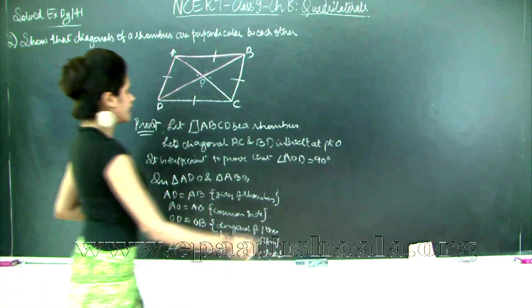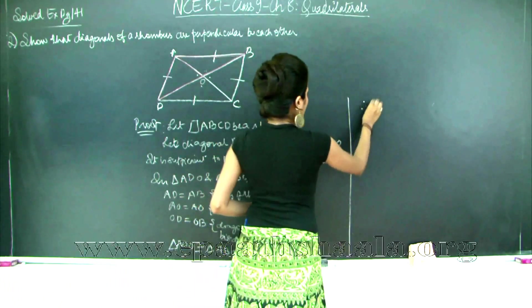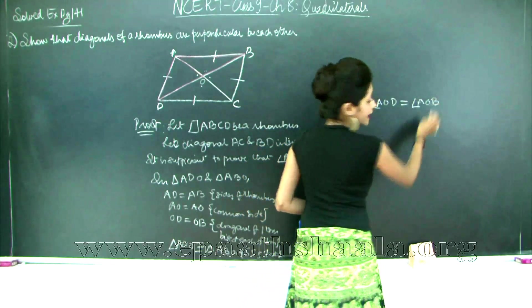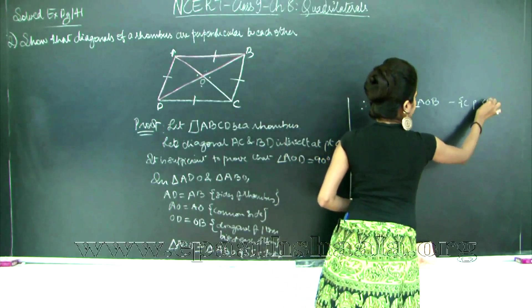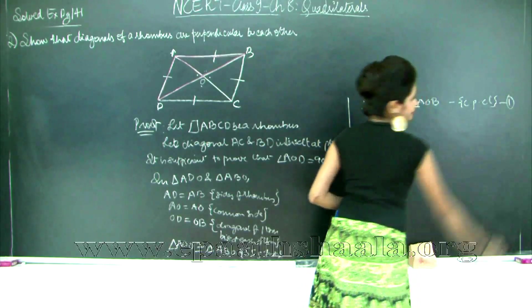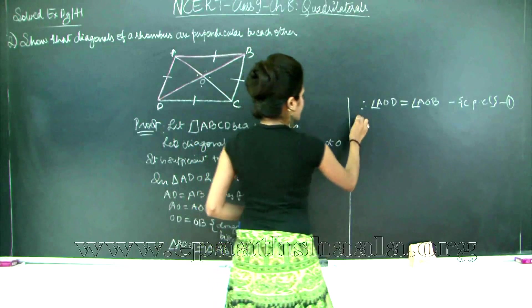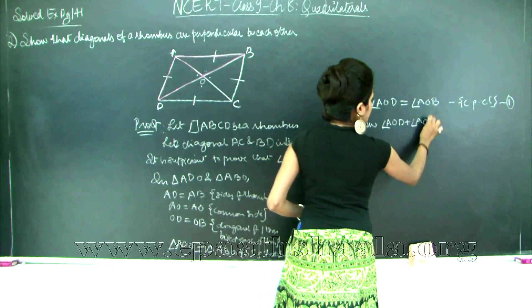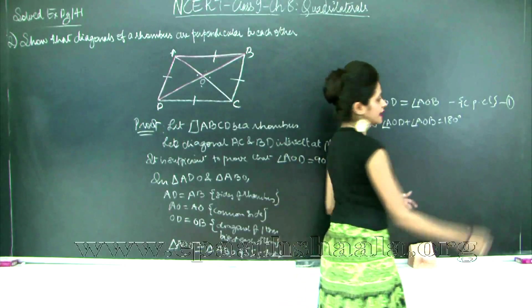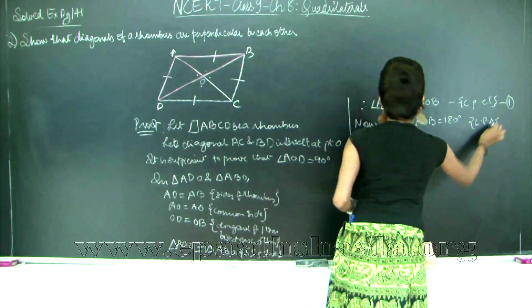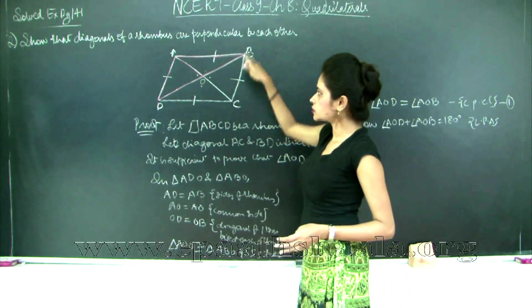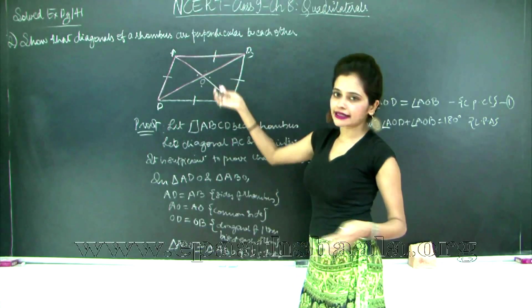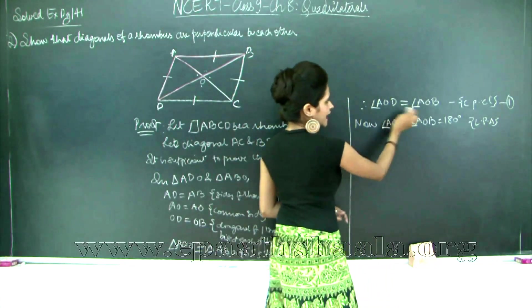Hence, angle AOD equals angle AOB — through corresponding parts of congruent triangles (CPCT). I will mark this as statement 1. Now, angle AOD plus angle AOB equals 180 degrees by the linear pair axiom, because BD is a straight line and OA stands on it, making these two angles an adjacent linear pair. I will mark this as statement 2.